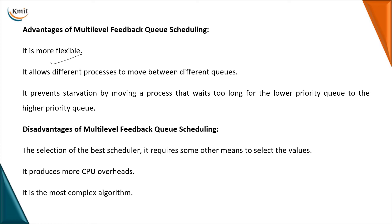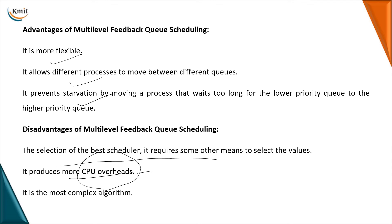The advantages of multi-level feedback queue scheduling are that processes can move between queues, making it very flexible. It prevents starvation because processes can be promoted using aging. The disadvantage is that it is more complex since each queue maintains a different algorithm, resulting in higher CPU overhead.